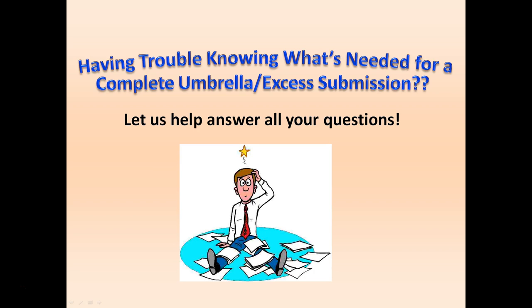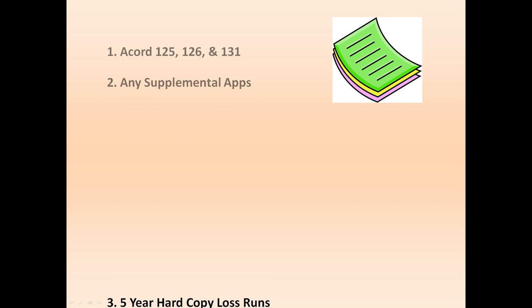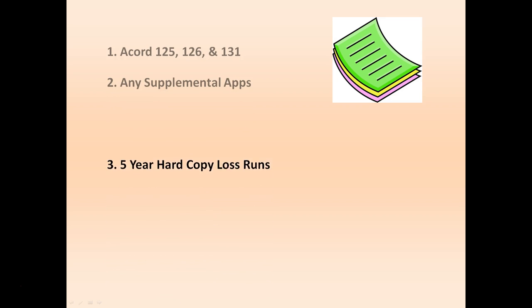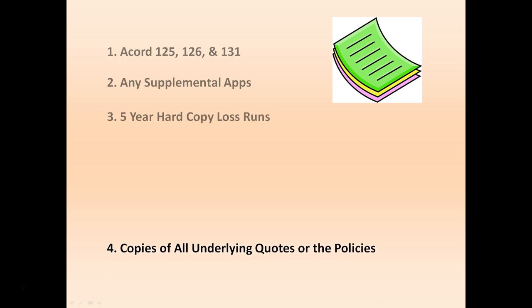All markets will require 6-7 key items depending on the risk: the Accord 125, the 126 and the 131, any supplemental apps from your underlying carriers, 5-year hardcopy loss runs, and copies of all underlying quotes or the policies if available.